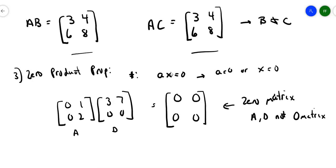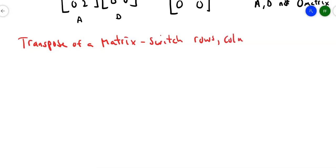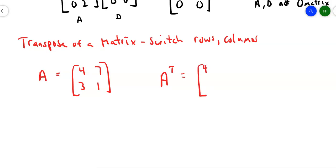Let's take a look at another type of matrix: the transpose. For the transpose of a matrix, you switch rows and columns. Suppose matrix A is 4, 7, 3, 1. The transpose of A means that instead of 4, 7 being the first row, it becomes the first column; and instead of 3, 1 being the second row, it becomes the second column. If you transpose the transpose, you get back to your original matrix.